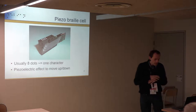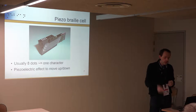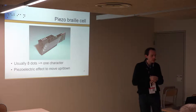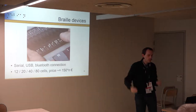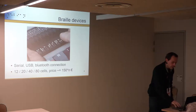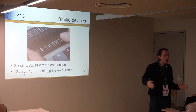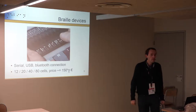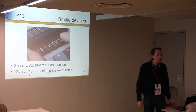A Braille cell has little dots that move up and down — I have one in my bag I can show you. Piezo bars push the dots and we put cells together to form a line, connecting to the PC via USB or serial. You typically have 20 or 40 cells side by side, and the cost is roughly 150 euros times the number of cells — so for 40 cells, several thousand euros. It's awfully expensive.